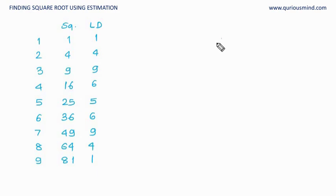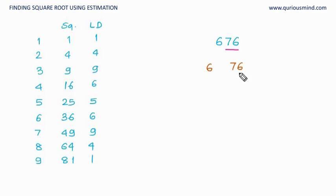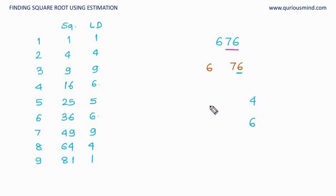Let us find the square root of 676. We are going to split this number into two parts: we take the last two digits away and keep the remaining one. So we have 76 and 6. Now look at the last digit — the last digit is 6. Looking at our table, the last digit 6 appears in 4 squared and 6 squared. So the last digit of our square root is going to be either 4 or 6, because in 4 squared and 6 squared the last digit is 6.